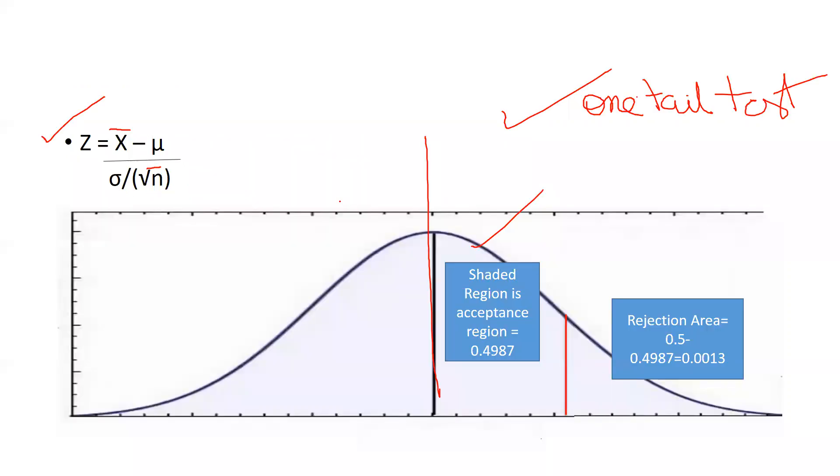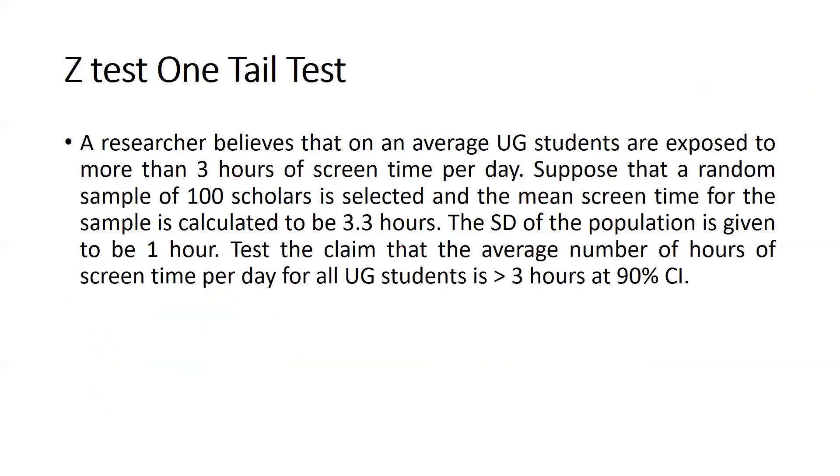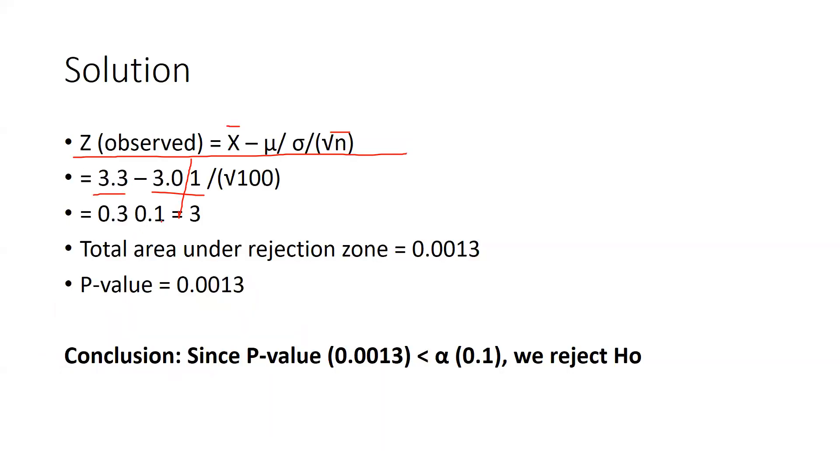1 means standard deviation already given you can see here. 1 is our standard deviation. So standard deviation 1 and after that 1 by under root 100 because 100 sample size we have taken.